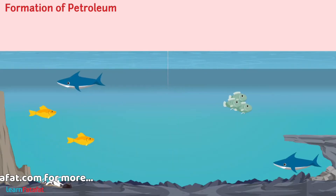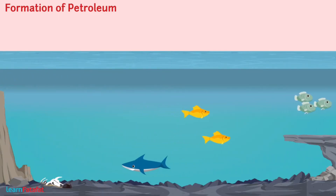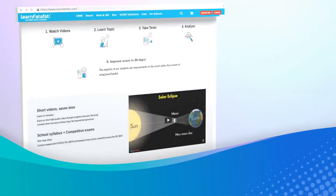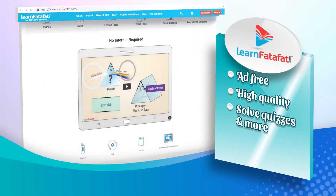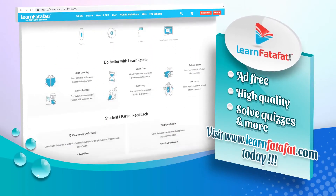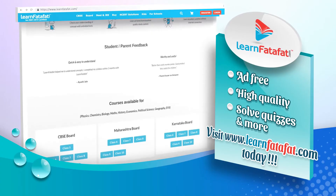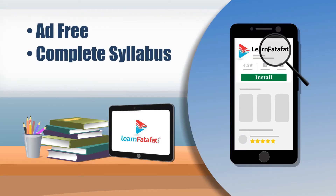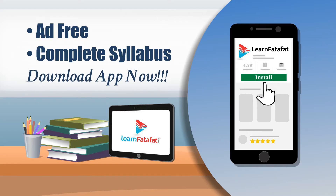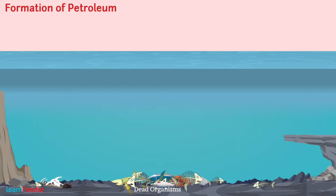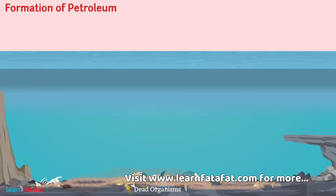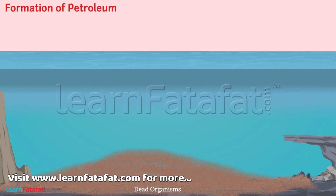Let's now understand how it is formed. The sea is home to a large number of organisms. When these organisms die, their bodies settle down at the bottom of the sea. Layers of sand and clay get deposited on their bodies.